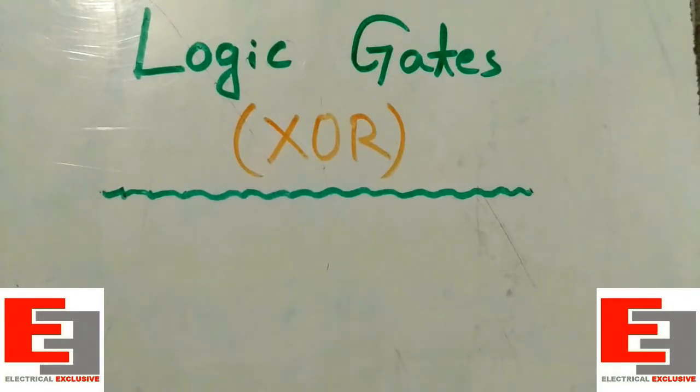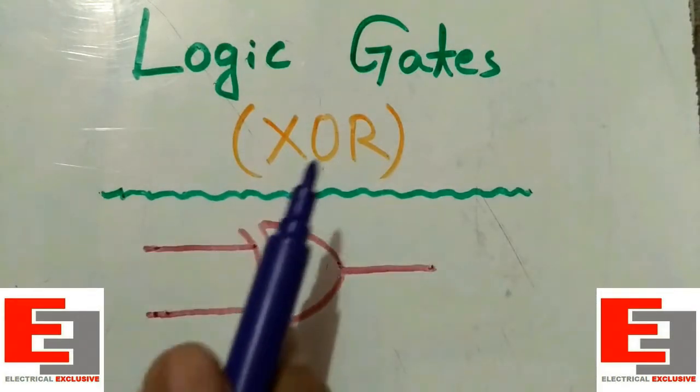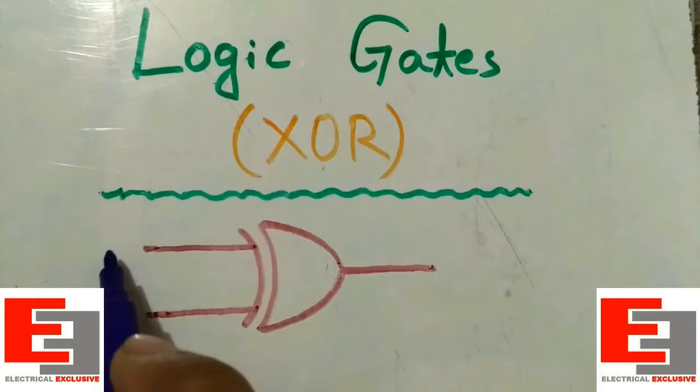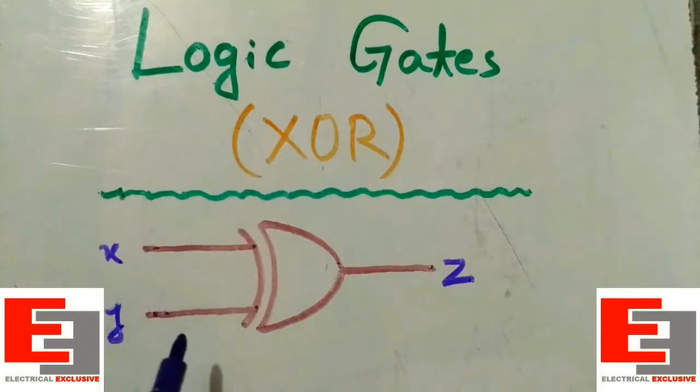This is the schematic diagram of the XOR gate which has two inputs X and Y. On the other side, this is the output terminal Z. These input terminals either receive logical 1 which is high input, or logical 0 which is low input.